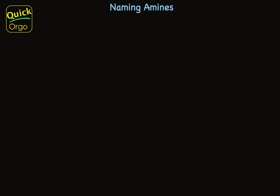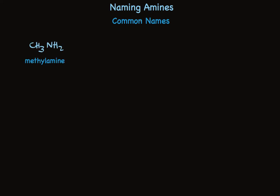Naming amines follows the pattern used for other functional groups. One approach is a systematic approach that has a set of rules — it lets you name anything, and it's always used for complicated structures with multiple functional groups. But for simple structures, common names are typically used. For amines that have an alkyl group attached, you simply say the name of the alkyl group and then the word amine, all one word — like methylamine.